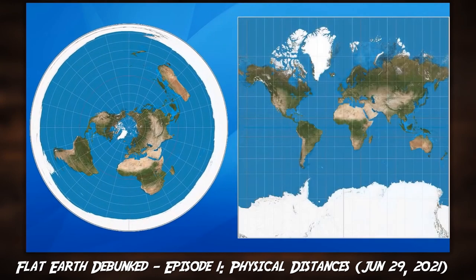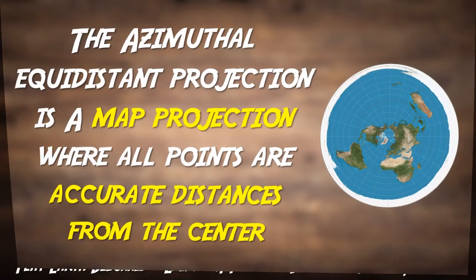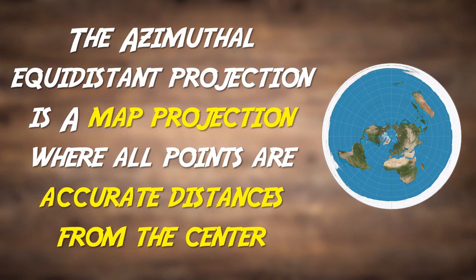For example, a straight line from the center of the azimuthal equidistant projection to Madagascar is equal to the distance from the North Pole to Madagascar on the Makeda projection. Thus, the azimuthal equidistant projection is a map projection where all points are accurate distances from the center.